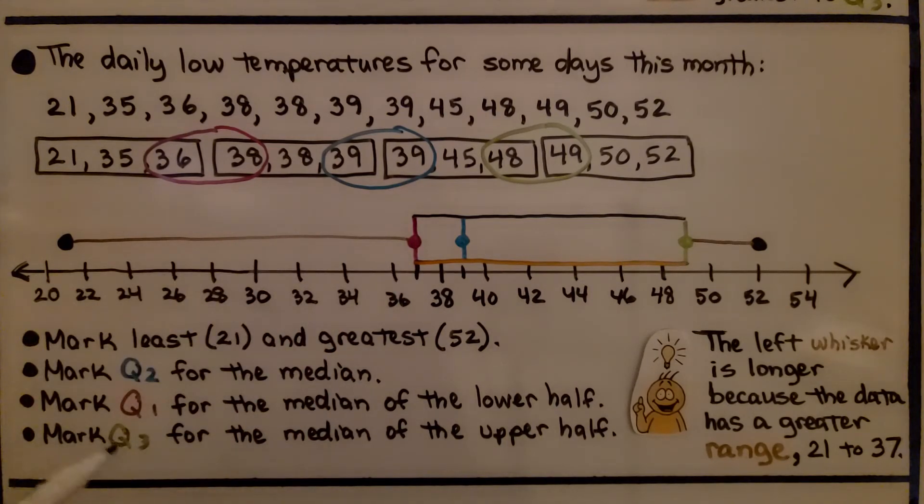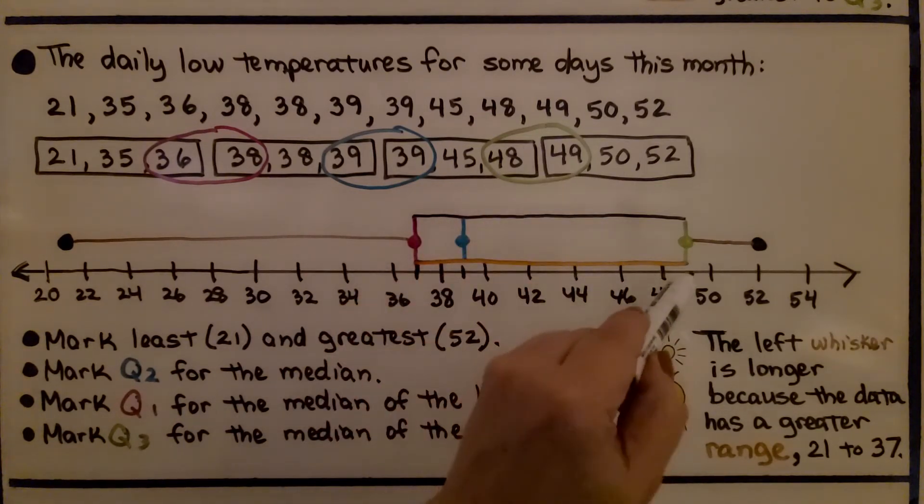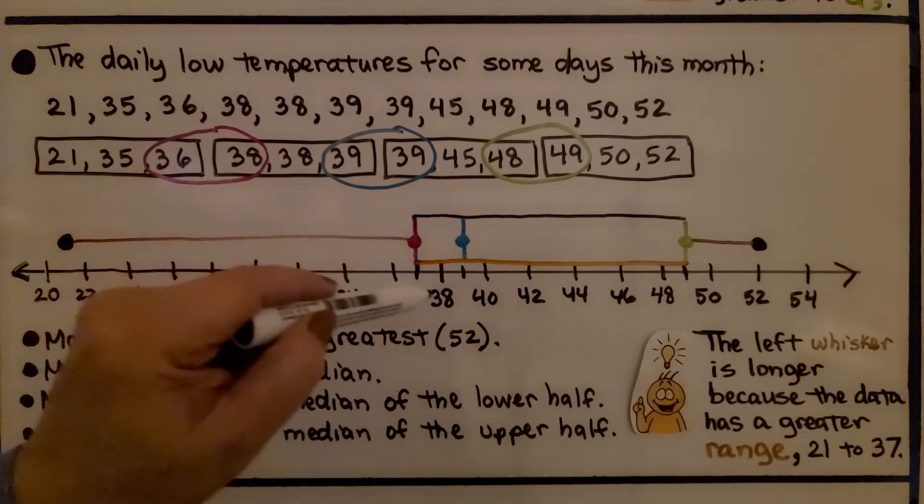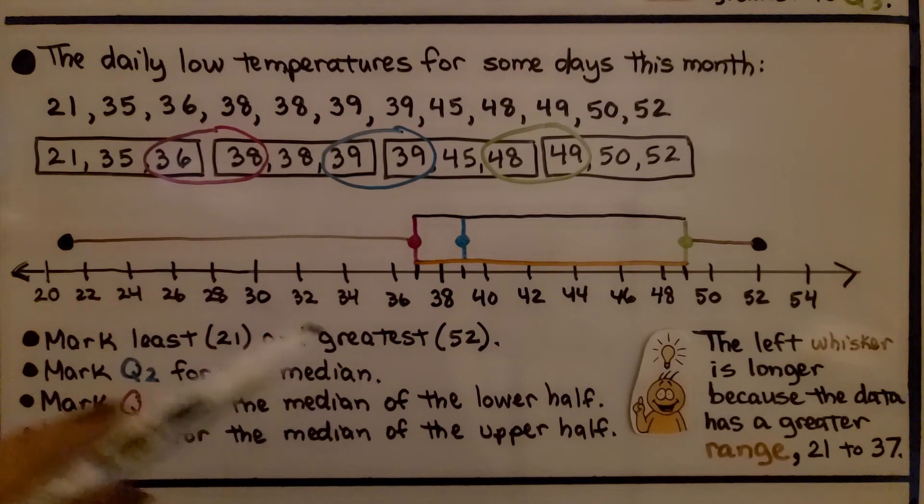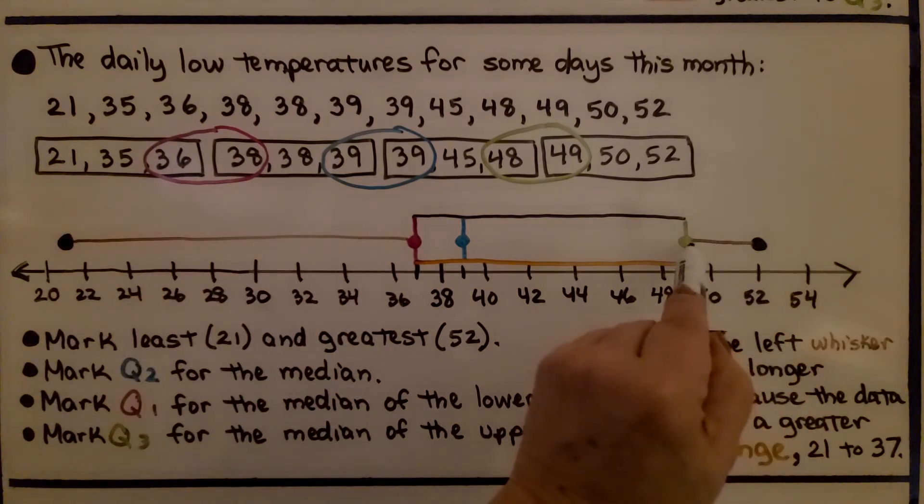Then we mark Q3 for the third quartile for the median of the upper half. We have 48 and 49. So it's going to be 48 and a half. Right? It's going to be about right there. We draw our lines for Q1 and Q2 and Q3. And we draw our whiskers from the lowest value to Q1 and the greatest value to Q3.